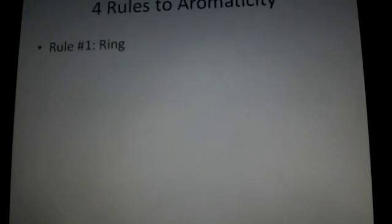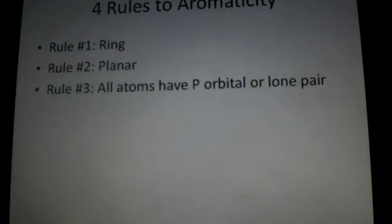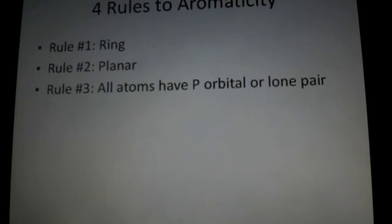There are four different rules to aromaticity. Rule number one is the ring — a molecular compound has to have a ring in order to be aromatic. Rule number two is that this ring has to be planar, meaning it has to be aligned with the surface; it can't be coming out. Rule number three is that all atoms have to have p orbitals or lone pairs of electrons on the ring. So if there's a carbon that doesn't have p orbitals or a lone pair of electrons, then it cannot be considered aromatic.